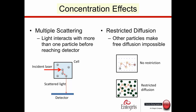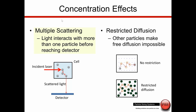One critical topic that too many people ignore is the effect of concentration. Higher concentration samples can have deleterious effects on measurements in two ways: multiple scattering and restricted or hindered diffusion. With multiple scattering, instead of the laser hitting a particle and going directly to the detector, it hits multiple particles before reaching the detector — this is not how the algorithm is designed to work, causing measurement errors.